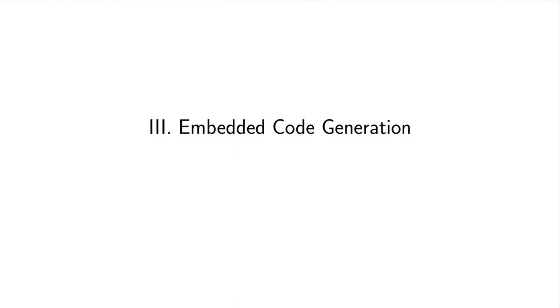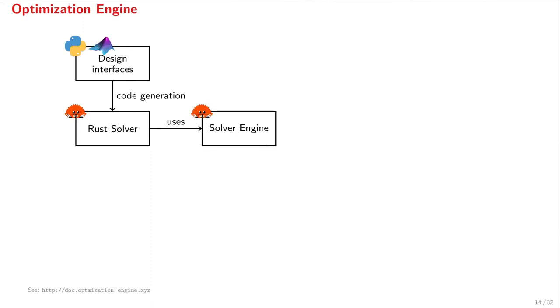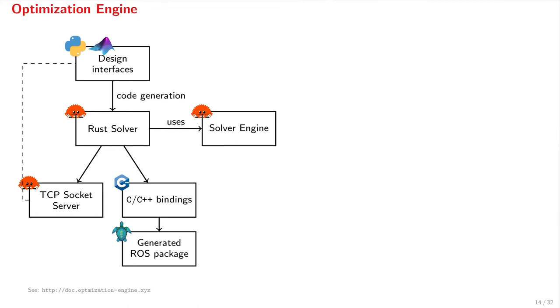Next, I will present how to use OPEN to generate an embedded parametric optimizer. Firstly, OPEN can be used via its design interfaces, which are available in Python and MATLAB. The design interface will generate a solver in Rust. Rust is a modern systems programming language that is becoming popular in embedded applications because it is provably memory-safe. The generated Rust solver makes use of the core algorithm implementation, which is also written in Rust. The functionality of the solver is then exported over a TCP socket server, which can be called from Python and MATLAB. OPEN will also generate C and C++ bindings, as well as a fully-featured ROS package for robotics applications. Overall, OPEN offers interfaces in Python, MATLAB, Rust, C, C++, and the robot operating system.